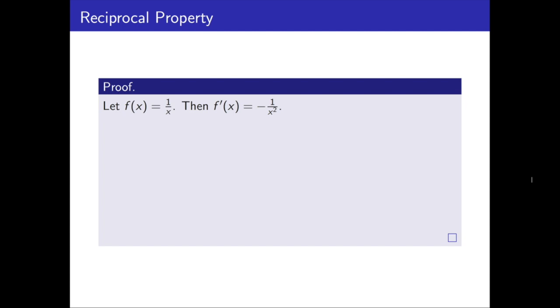So why is this true? Well, let's consider the function that takes the reciprocal, so f of x equals 1 over x. We know how to take the derivative of that, we get negative 1 over x squared.